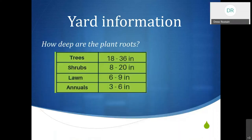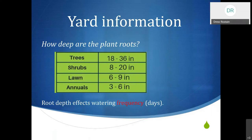The last piece of information is how deep are the plant roots. There are some ranges depending on how mature the plants are. The root depth is going to affect the frequency — how often the controller decides to water. When we get to the end, we'll take a look at our settings and the root zone will be the first thing we want to adjust. If something isn't quite right, the root zone is the one thing you can't really see. We're estimating based on typical ranges, so this is the one to adjust first before making changes to other parameters.